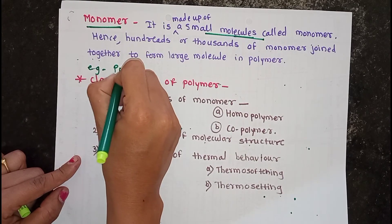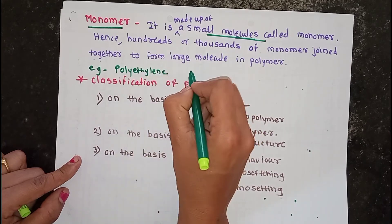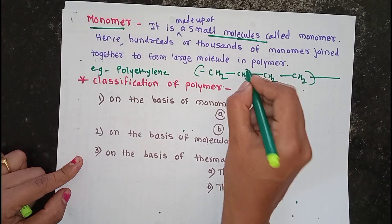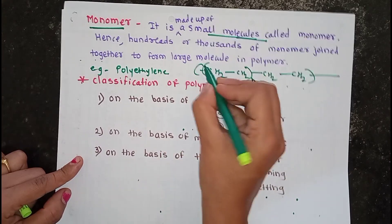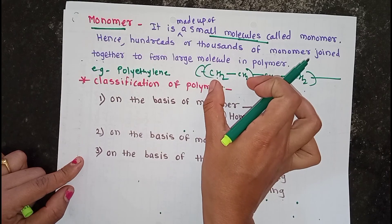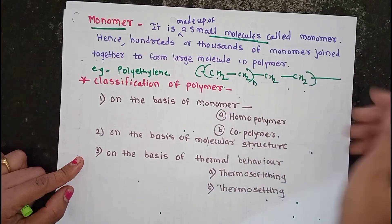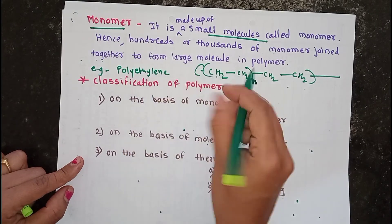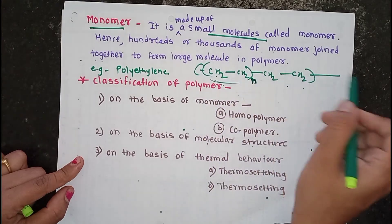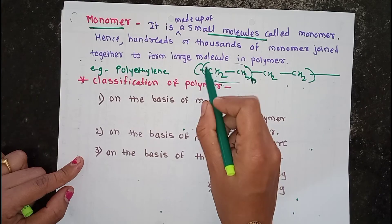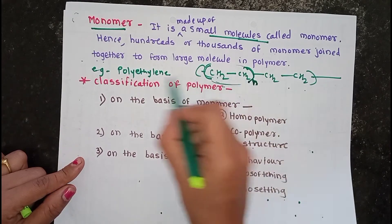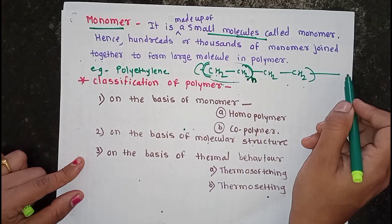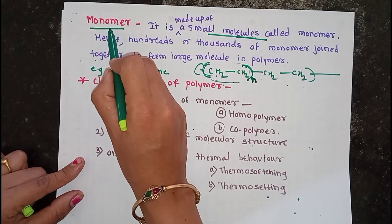For example, take the polymer polyethylene. The structure of polyethylene is CH₂-CH₂-CH₂ — repeated n number of times. The CH₂-CH₂ unit is ethylene, which is repeated regularly in the structure of polyethylene. This one unit, ethylene, is the monomer of polyethylene. So a monomer is a small unit or small molecule that is repeatedly found in that polymer structure.